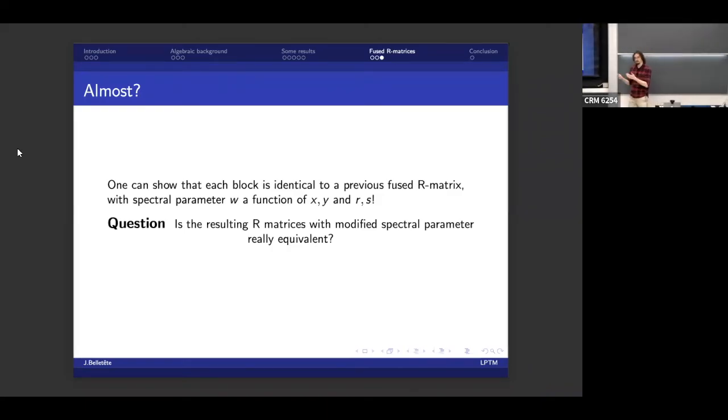So the question is, is the resulting R matrix with the modified spectral parameter really equivalent to what we started with? And the answer to the question is no. And usually no is a bad outcome. But in this case, it's actually good. You can check very easily by doing some numerics on a small lattice that the effect of inserting these fused R matrices in a lattice model depends greatly on the specific value of the spectral parameter that you put. Did you put the same one as everyone else or did you vary it?